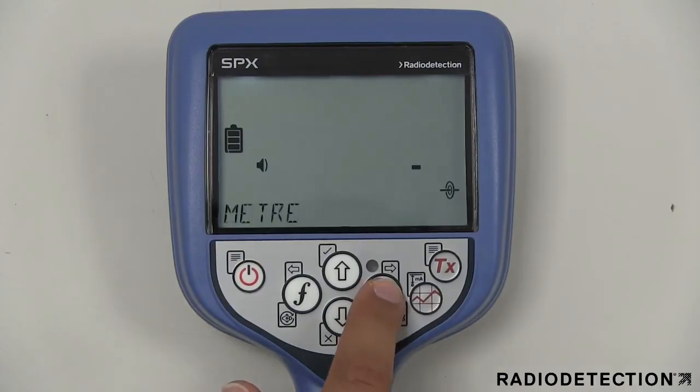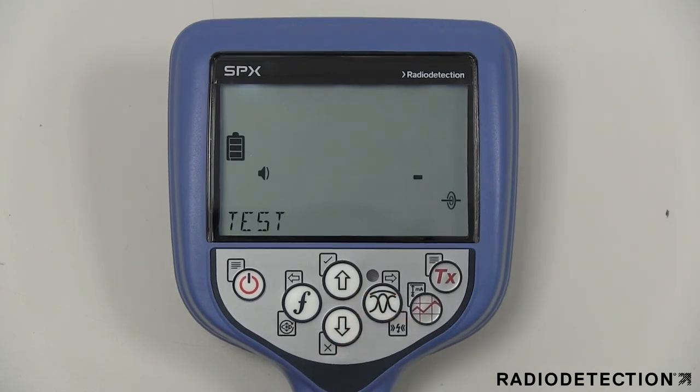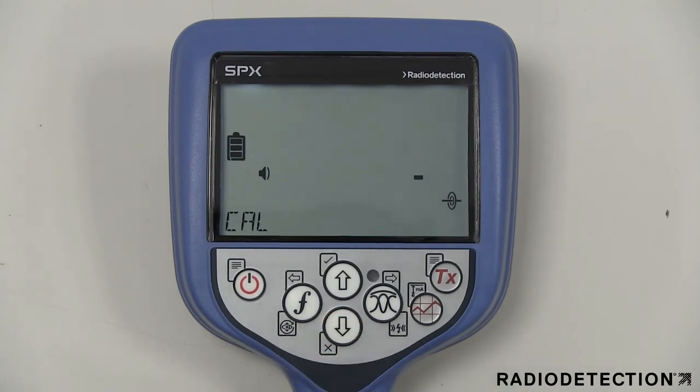The units menu gives you the option of displaying metric or imperial units on the screen. The info menu option allows you to run a self-test, which checks the basic functionality of the locator. You can also display the date of the most recent service recalibration or the most recent e-search calibration.